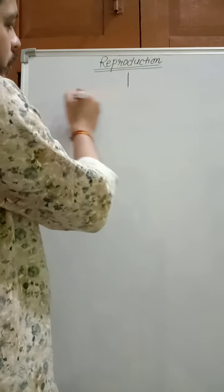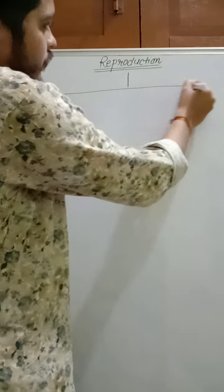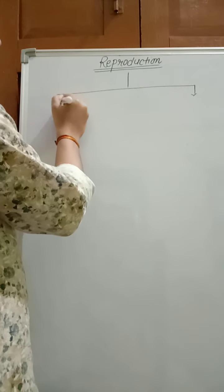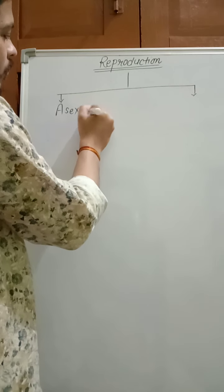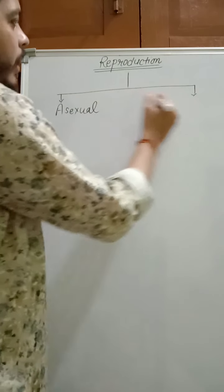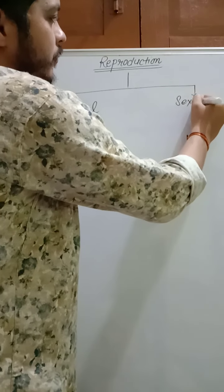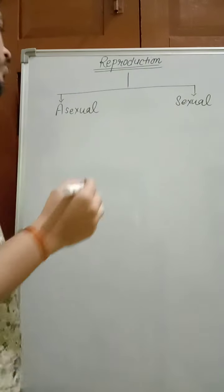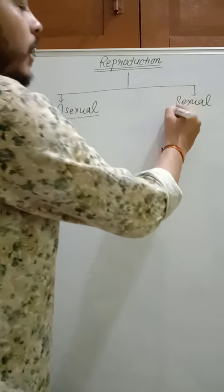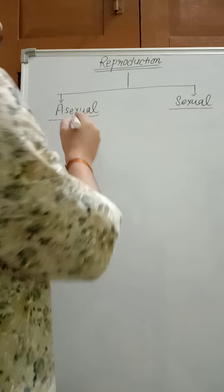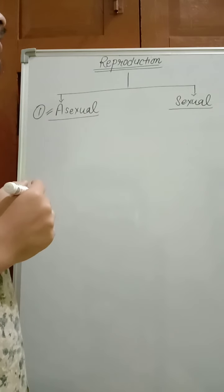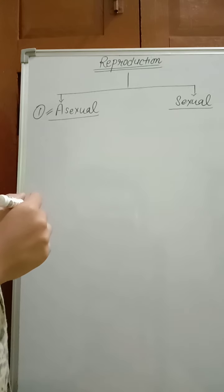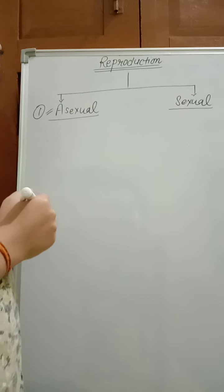Reproduction is of two types. One method is asexual and another one is sexual. In asexual mode of reproduction, there is no involvement of gametes. What is a gamete?